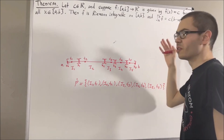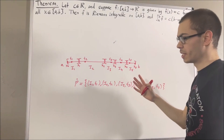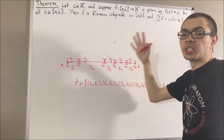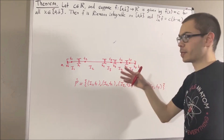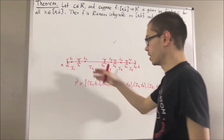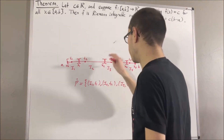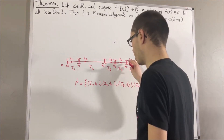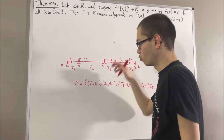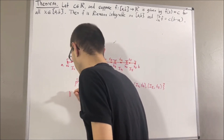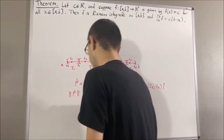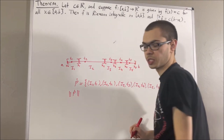The norm of a partition is the length of the longest subinterval in the partition. In this case, the norm of this partition would be the length of I₂, and we symbolize the norm of a partition with double vertical bars.